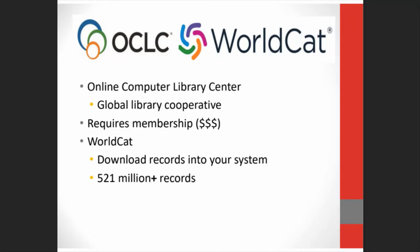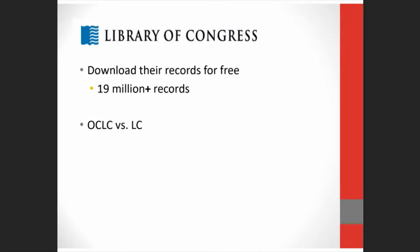If your library does ILL through OCLC's WorldShare ILL, which most of us do, this is the database that it uses. Another popular way to get records is through the Library of Congress, or LC. They currently have over 19 million records, and the big advantage is that you can download records from their catalog for free. The huge difference between OCLC and LC is that LC is a functioning library for Congress. OCLC accepts records of different levels of quality from not only libraries, but also from vendors and publishers, and the quality can be questionable on some of those records.